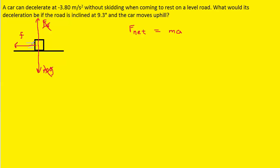The frictional force is pointing to the left, and we're going to call that the negative direction. We'll call the right the positive direction. So in essence, our net force is going to be that single frictional force — notice we put a negative sign in front of it — and that is equal to the mass times the acceleration.